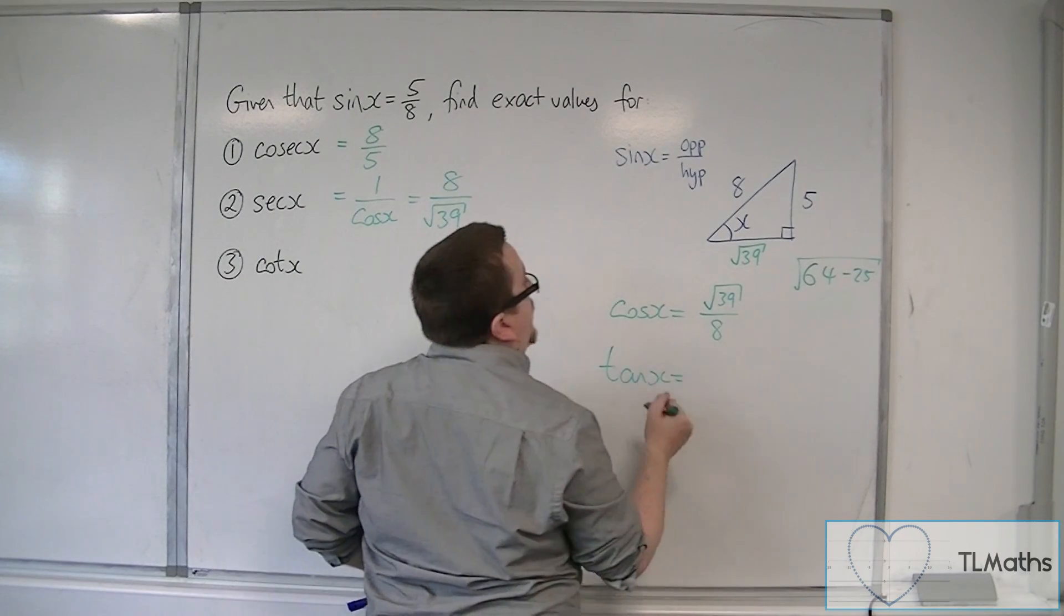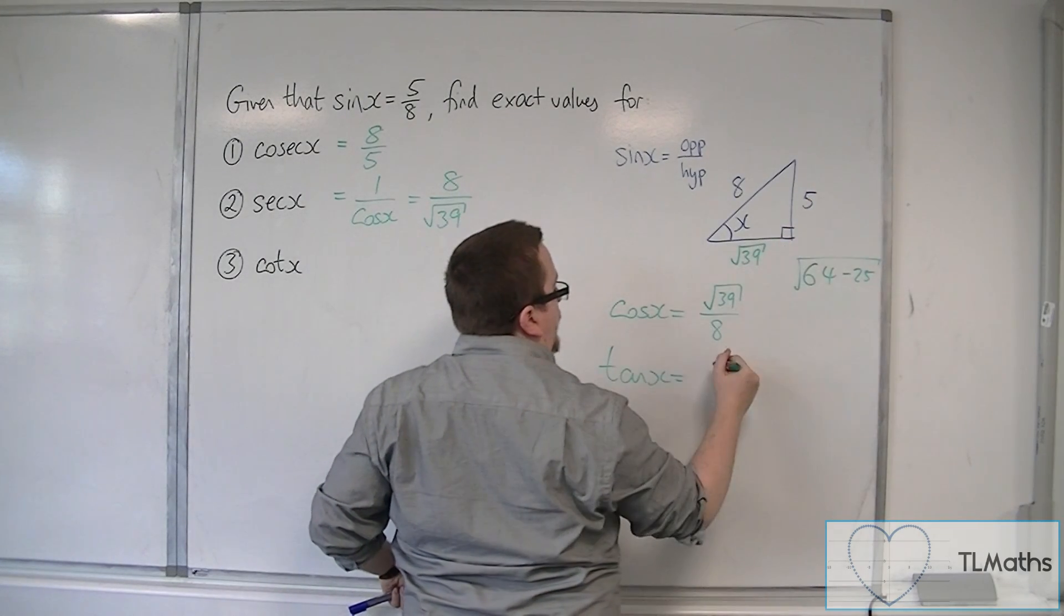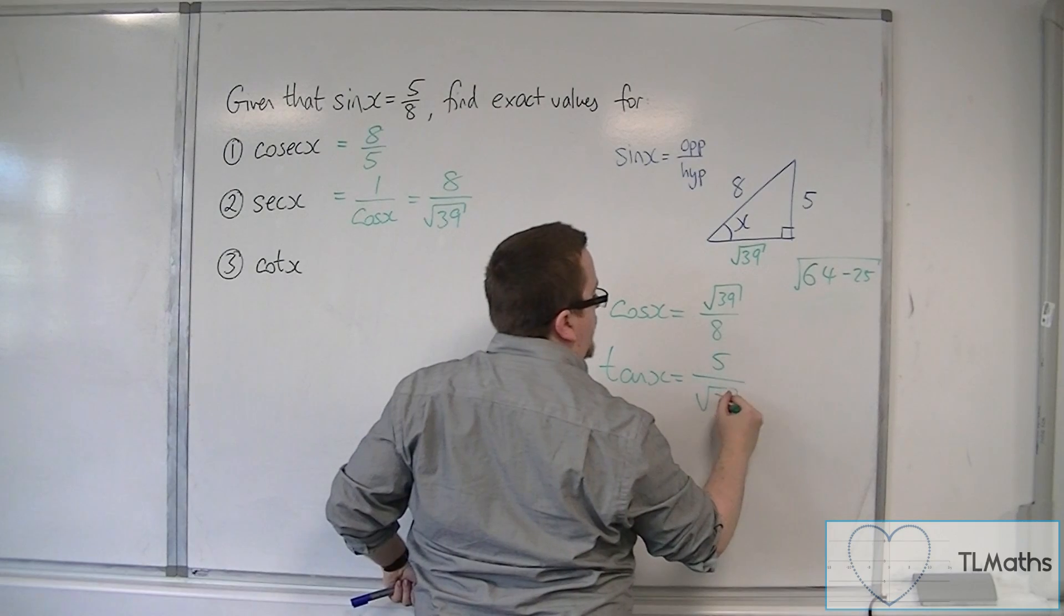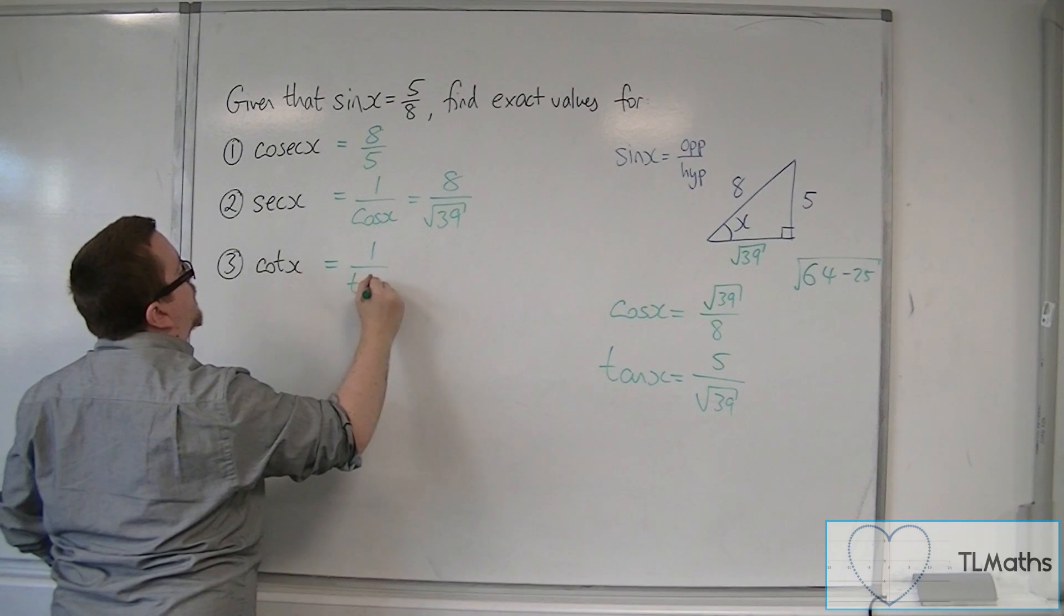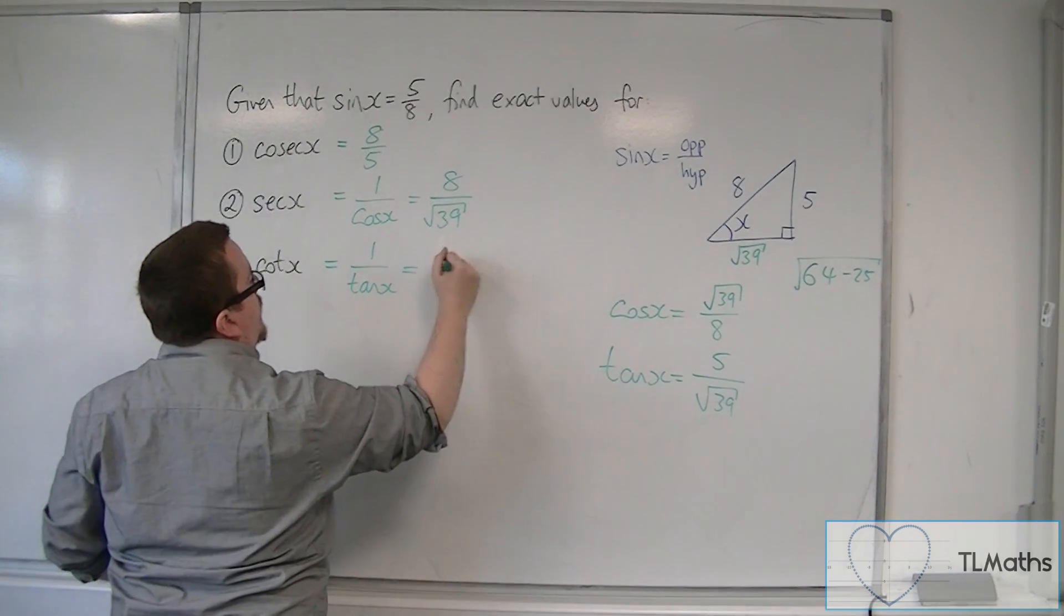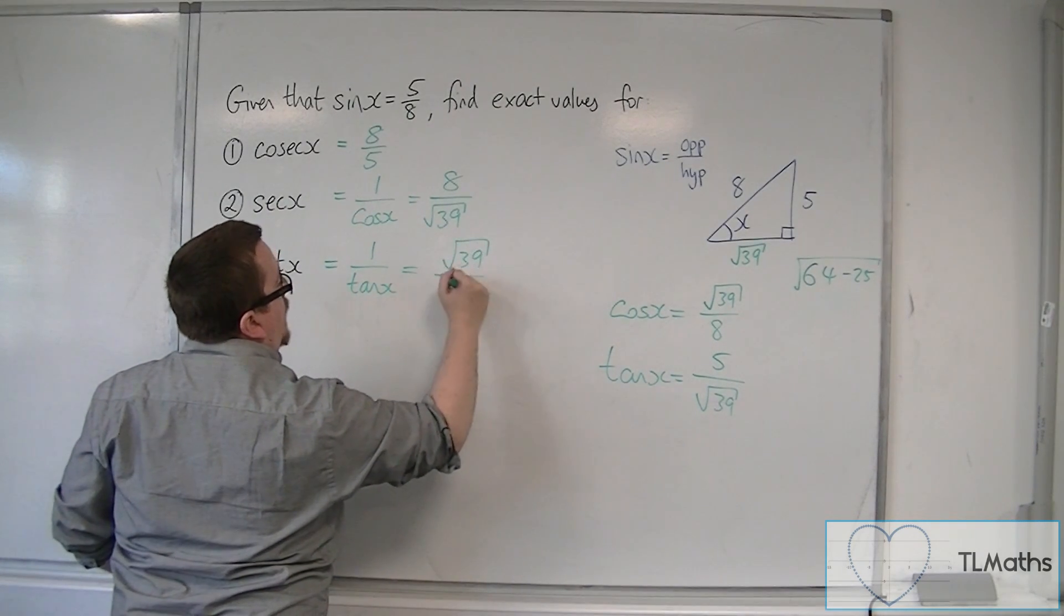Tan is opposite over adjacent, so 5 over root 39. And so cot is 1 over tan, which is root 39 over 5.